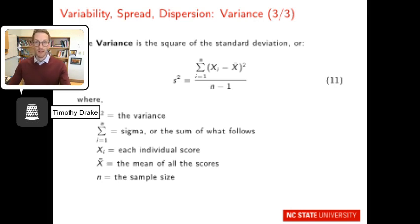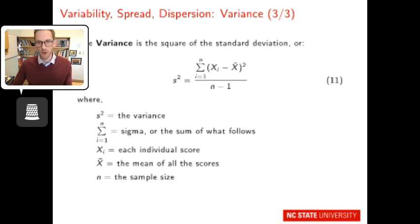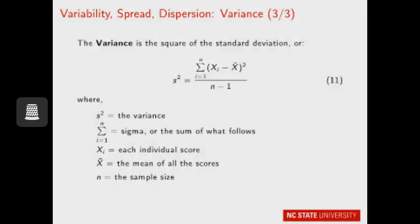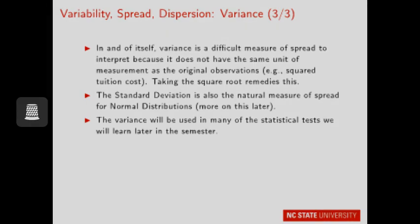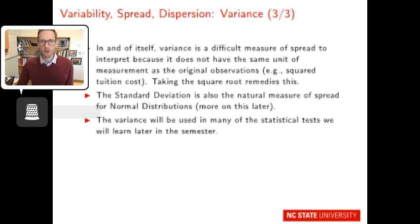The third measure of variability is the variance — which is simply the square of the standard deviation. It's an easy formula: take away the square root sign from the standard deviation formula and you have your variance calculation. Alone, variance is a somewhat difficult measure to interpret because it doesn't have the same units as the original variable.